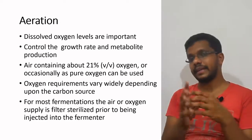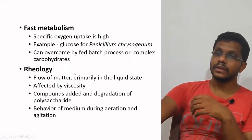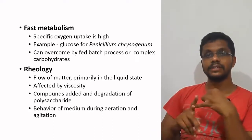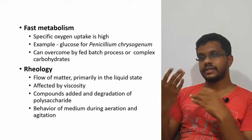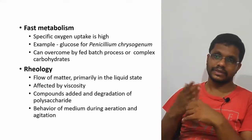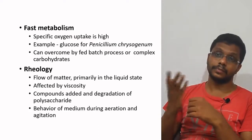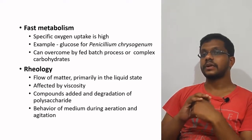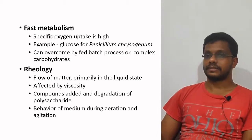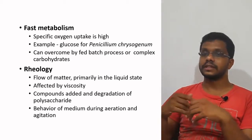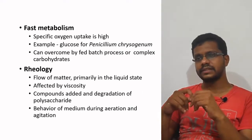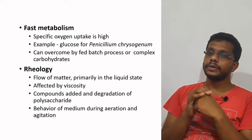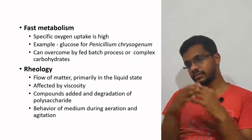For most fermentations, the air or oxygen supply is sterilized using filtration to supply sterile air. Fast metabolism occurs especially when using simple sugars or simple nitrogen sources — the microorganism metabolizes them quickly and oxygen demand increases rapidly. For example, if glucose is provided to Penicillium chrysogenum, oxygen demand is so high the organism stays in log phase and won't produce penicillin. Fast metabolism can be avoided by using a fed-batch process — adding glucose step by step — or by using complex carbohydrates instead of simple sugars.